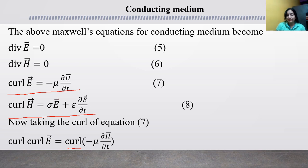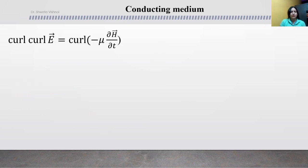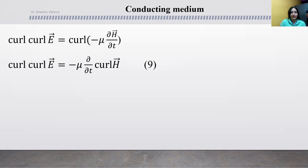Curl is an operator and del over del t is also an operator, so we can interchange them. Then applying the vector identity to curl curl E, and after the operator interchange, we get minus mu del over del t of curl H.